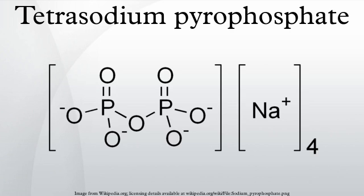Sodium pyrophosphate is used as a buffering agent, an emulsifier, a dispersing agent, and a thickening agent, and is often used as a food additive.